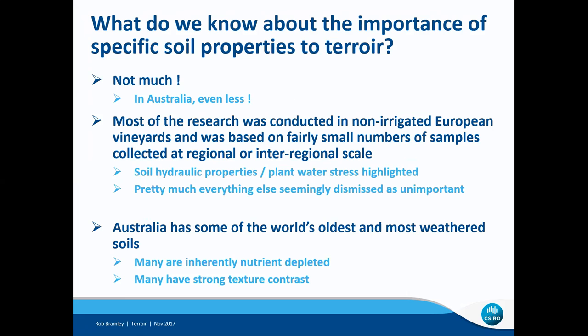Australia has some of the world's oldest and most weathered soils, and many of our soils are inherently nutrient depleted, especially in places like Western Australia. Many of them have a strong texture contrast due to the process of clay translocation, which results in clay particles moving down the soil profile over geological time. In Europe where the soils are much younger, that time hasn't been sufficient for that sort of texture contrast to develop. So really, relying on European work to say something about the importance of soil properties to Australian terroir is drawing a very long bow.